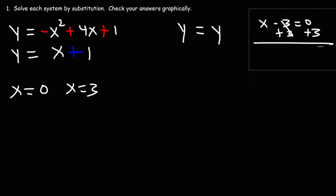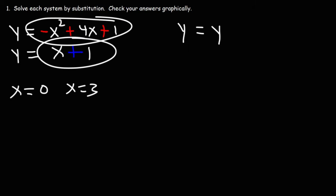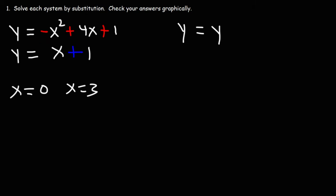To solve this system, we need the corresponding y values for each x value. We can get them by plugging into either equation, but since the second equation is simpler, we'll use that. Plugging in zero, we get zero plus one, which is one. Plugging in three, we get y equals three plus one, which is four.